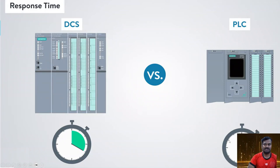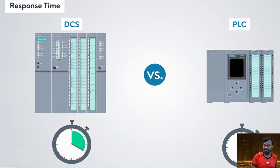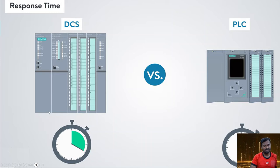Regarding response times, PLC is faster than DCS. Because PLCs handle fewer inputs and outputs and simpler programs, the input scan, program scan, and output scan are completed faster. DCS has more complex loops and processes, and more inputs and outputs to execute each cycle, making DCS somewhat slower than PLC.